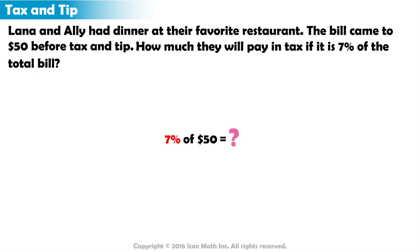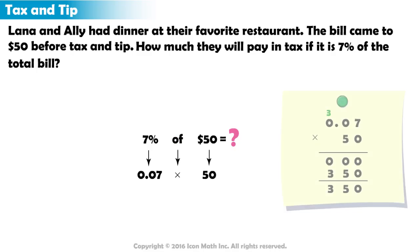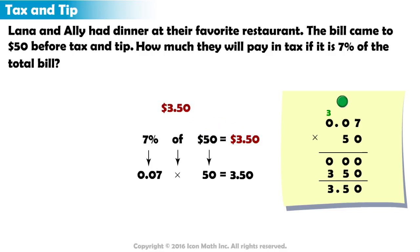7% as a decimal is 7 hundredths. "Of" indicates multiplication. 7 hundredths multiplied by 50 equals 3 and 50 hundredths. The total amount of tax Lana and Allie will pay is $3.50.